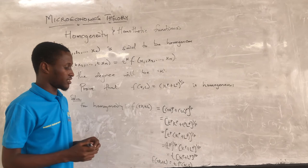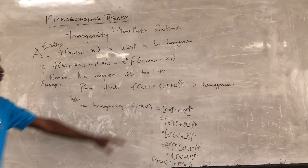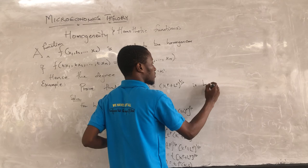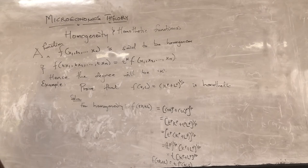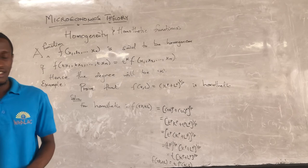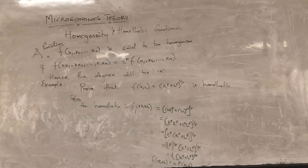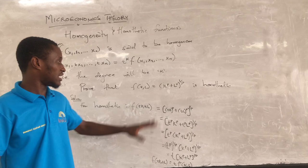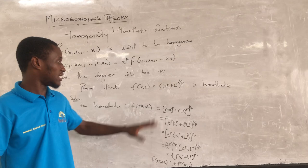In this case the degree is one. So we have proven that this function is homothetic. For a function to be homothetic, the order is supposed to be one. Since the degree of t is one, we see that this function is homothetic. We've done the proof of homogeneity and for the homothetic function.